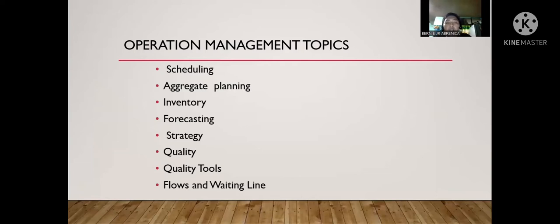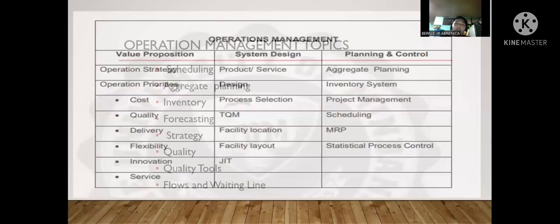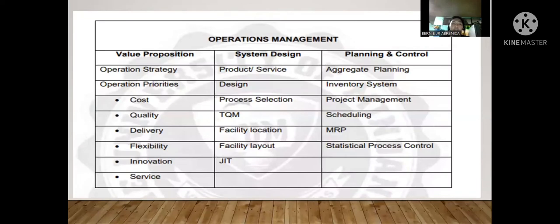These eight operation management topics are what we need to run a business, make profit, provide service to customers, and satisfy what they want. We also have the operations management table, which includes the value proposition — a promise of value to be delivered, communicated, and acknowledged.